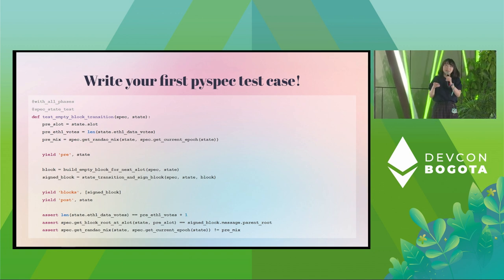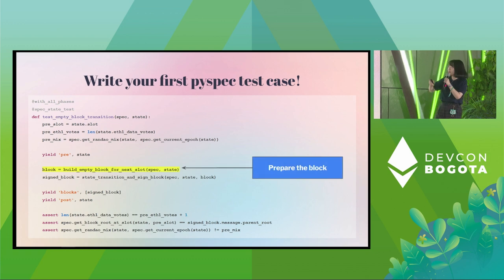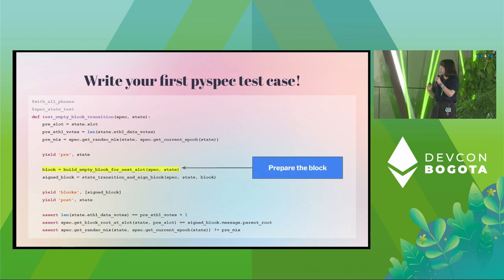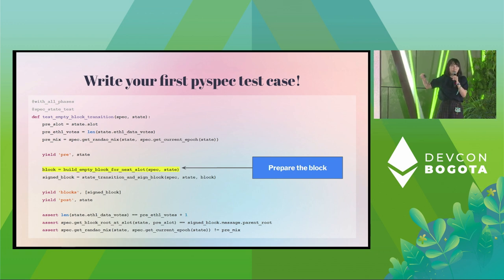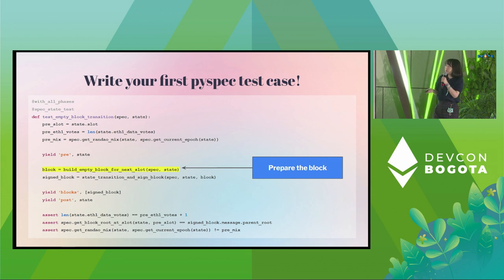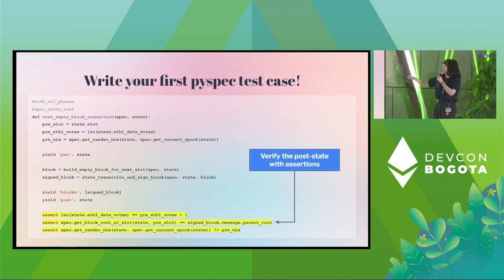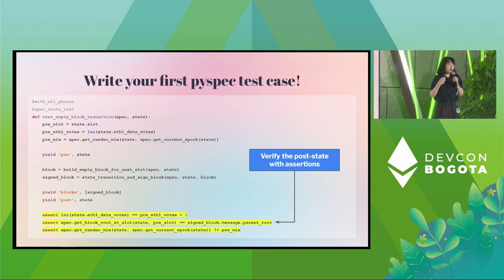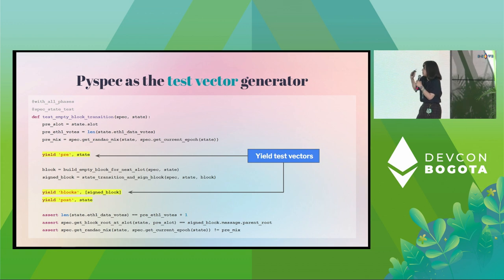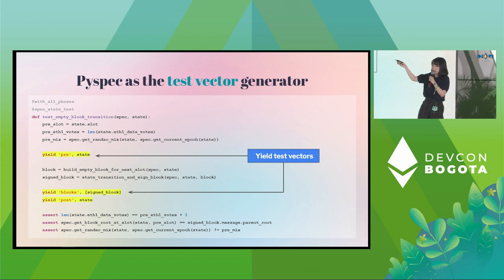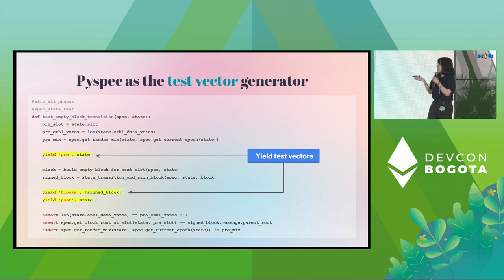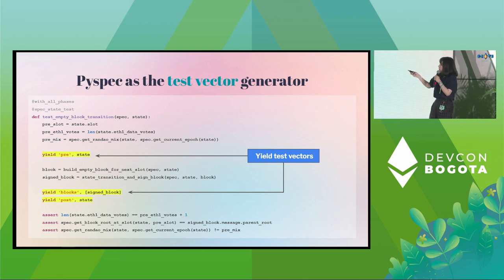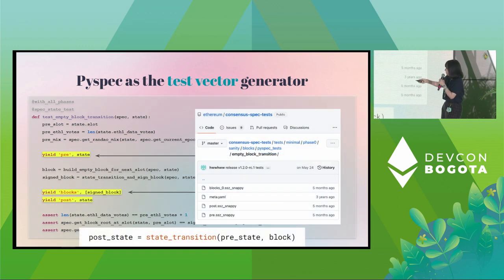Here is how to write your first PySpec test case. There are already some existing helper functions to help you prepare the beacon block or manipulate the beacon state. There are also some assertions to set the test goals for this test case. An important part is the YAML Python comments — these are used to output the test vectors. For example, we output the pre-state, the signed beacon blocks, and the post-state. The output files will be there, and the resulting list is a pure function for clients to test with.